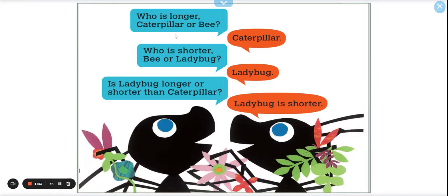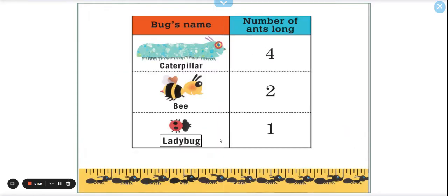Who is longer, caterpillar or bee? Caterpillar. Who is shorter, bee or ladybug? Ladybug. Is ladybug longer or shorter than caterpillar? Ladybug is shorter. We know ladybug is the shortest, don't we? Just by looking at the table. So ladybug is the shortest. Caterpillar is the longest. And our unit of measure was an ant.